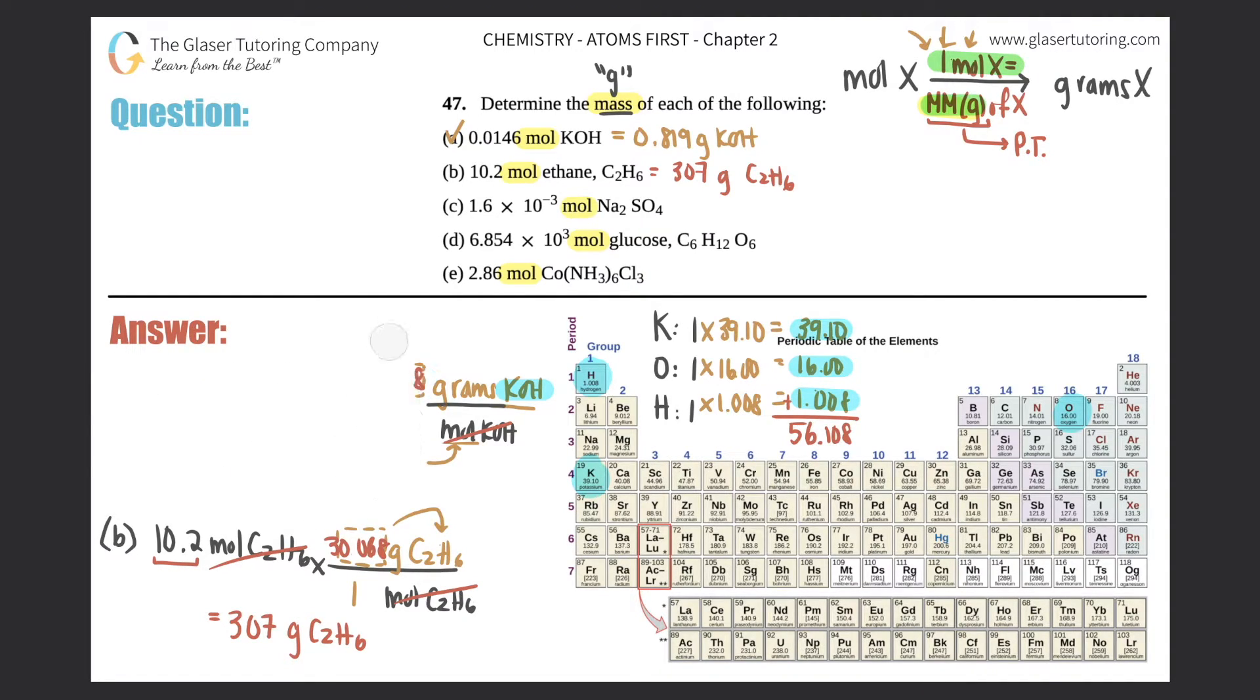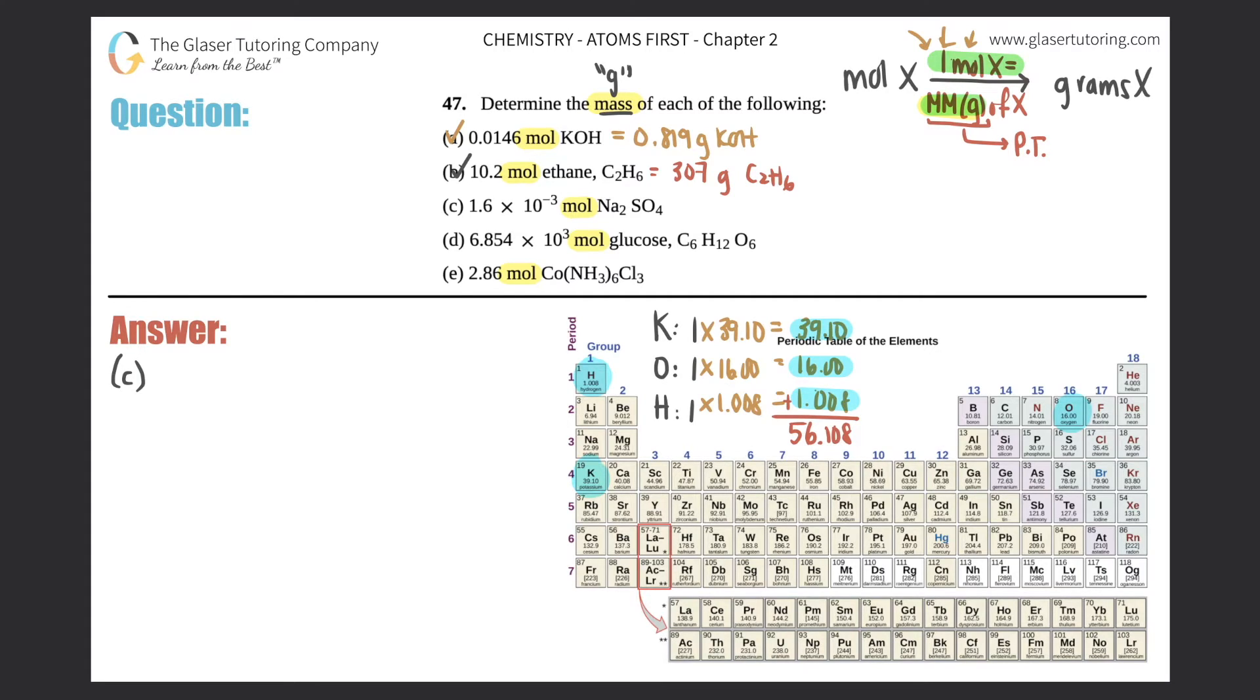Let me erase and then we will start anew. What do you guys think? Is this easy? Let me know in the comments. Hopefully it's easy for you guys. I want to make it as simple as possible. Part C: we got 1.6 times 10 to the negative 3 moles of Na2SO4. Times by that ratio - we don't want moles of sodium sulfate, so that goes on the bottom, and we want grams.